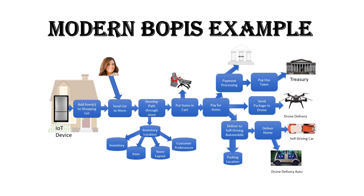The items, once paid for, you have to figure out how to deliver them — how the customer wants them delivered. So you either send the package to a drone for delivery, or you split them off and send them to a self-driving automobile. In that case, you've got to know where it is. If the customer has a self-driving auto, it comes and gets parked somewhere in the parking lot and you've got to find it to put the items in. It then either gets delivered to the home through this self-driving automobile or through a drone delivery.